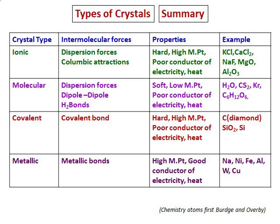Ionic crystals are formed in an ionic compound, like sodium chloride, etc. The intermolecular forces include dispersion forces, but they mainly have coulombic attractions. Because of the coulombic attraction, they are very hard, they have a high melting point, but they do not conduct electricity in solid state. Examples include all ionic compounds: potassium chloride, calcium chloride, etc.